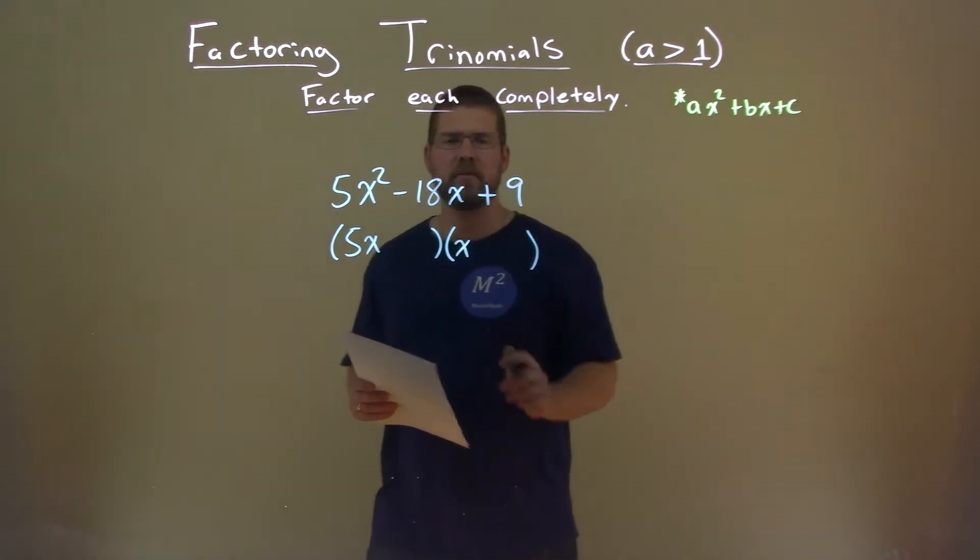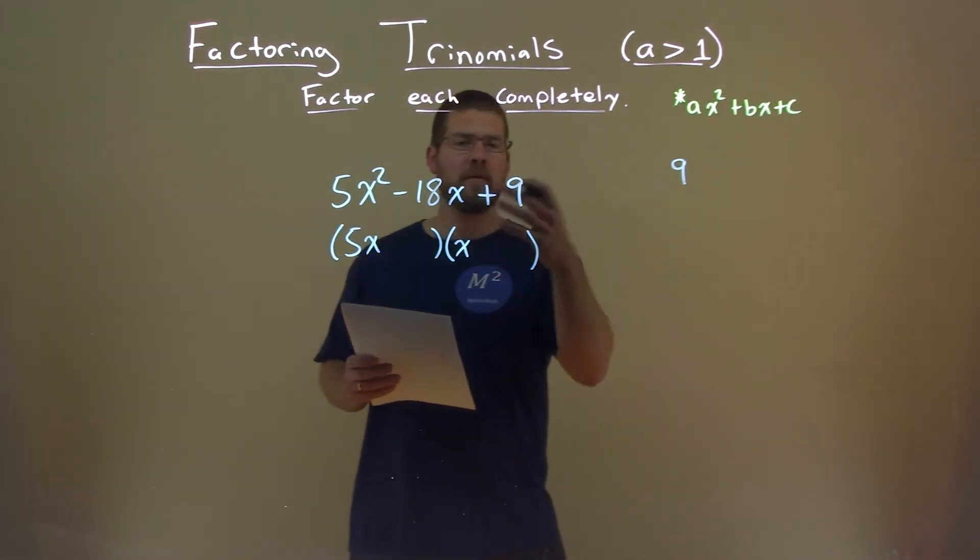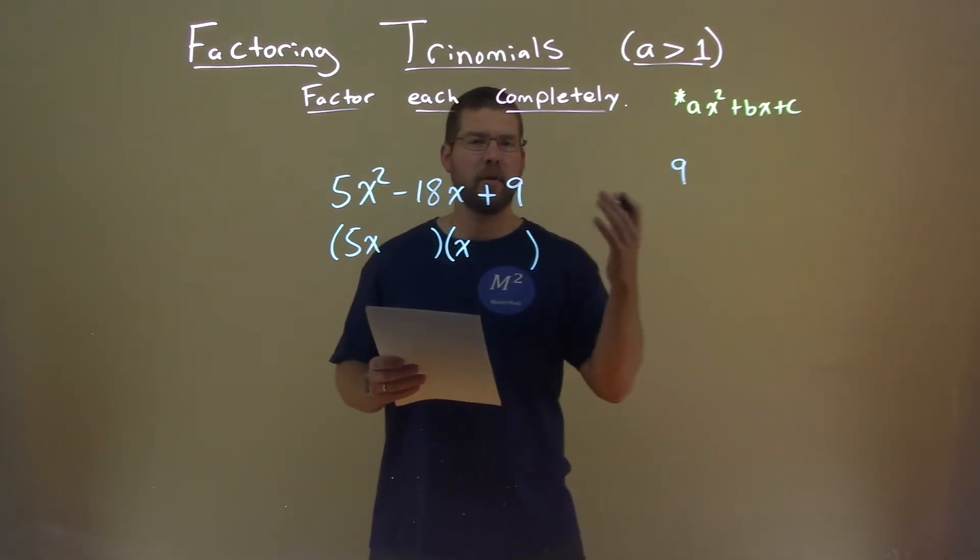We now look at our c value, which is 9. Since our b value is negative, we know both values multiplied to be a positive 9 will both be negative.